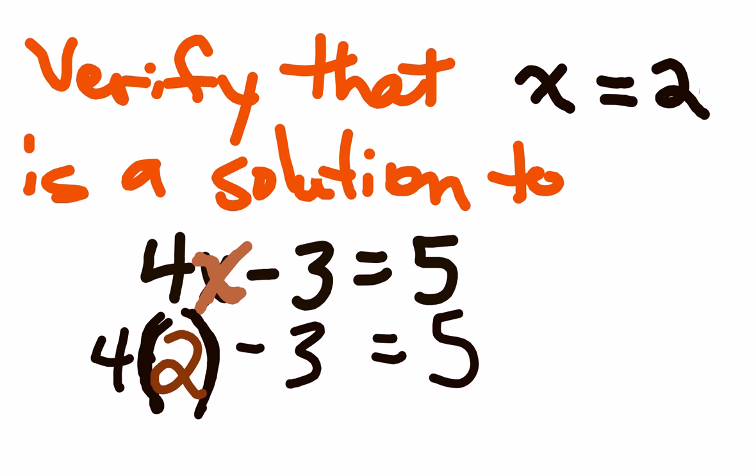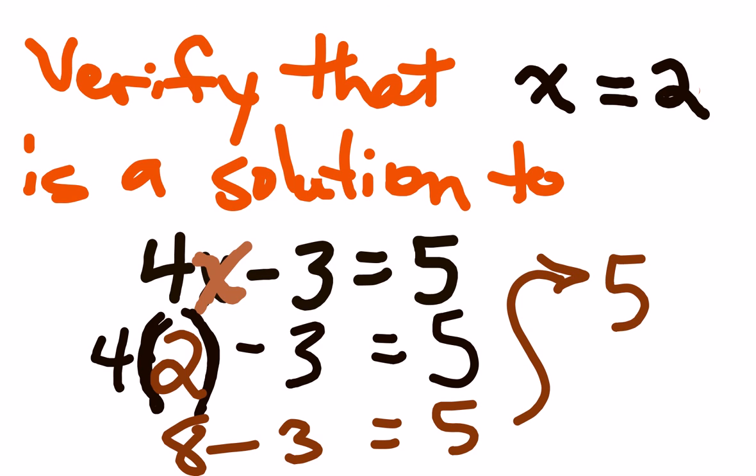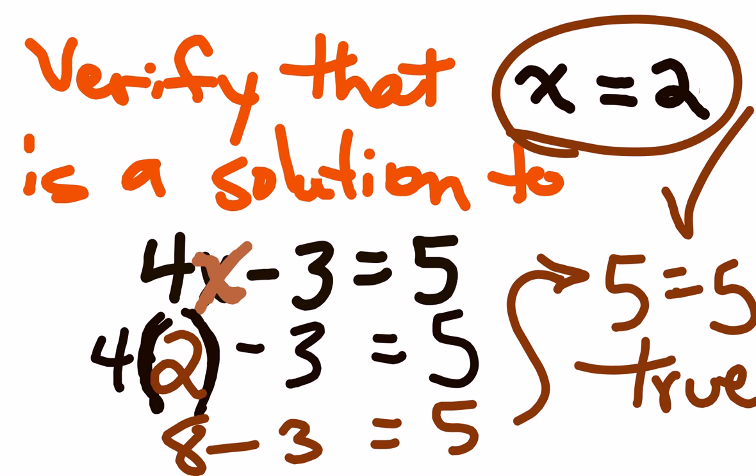Let's check and see if the equal sign remains true or balanced. 4 times 2 is 8, so we have 8 minus 3 equals 5. 8 minus 3 is 5, and on the right side we still have 5. This is true. In other words, X equals 2 is correct. It is definitely a solution to this equation. That's how you check your equation solutions.